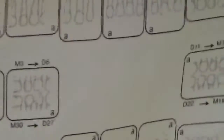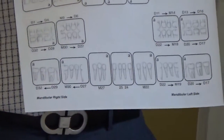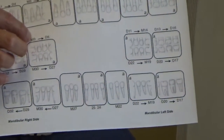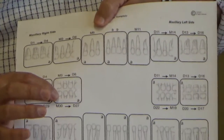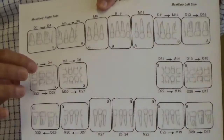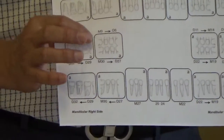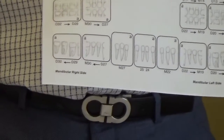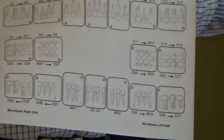When you take the bite wings, you want to get the distal surface of the canines — whether upper or lower. On the right side, you want the mesial surface of tooth number three and the mesial surface of tooth number thirty in the lower. When you take the second bite wing, you want to get the distal surface of tooth number four to the distal surface of tooth number one. The D's and M's stand for distal and mesial, and the number next to it is the tooth number.